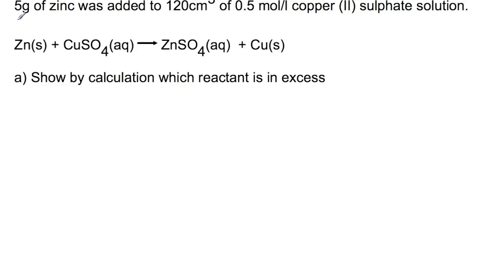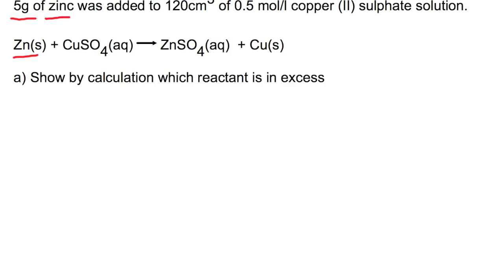In this reaction, we have 5 grams of zinc, which is solid, and we are reacting that with 120 centimeters cubed of 0.5 mole copper sulfate solution. So what we have here is a displacement reaction and we're trying to show which of these two reagents is in excess.